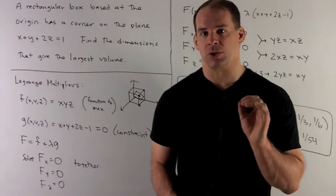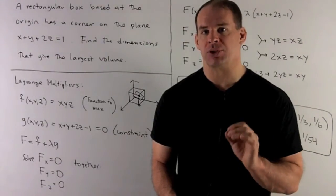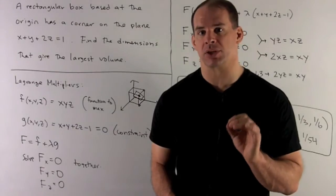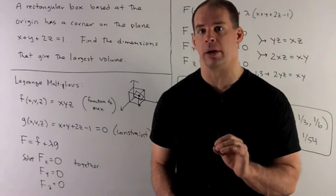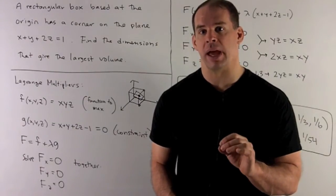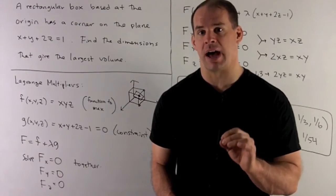A rectangular box has one corner at the origin, opposite corner on the plane x plus y plus 2z equals 1. Find the dimensions that maximize the volume of the box.